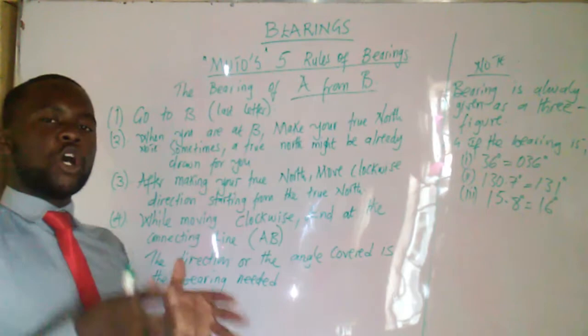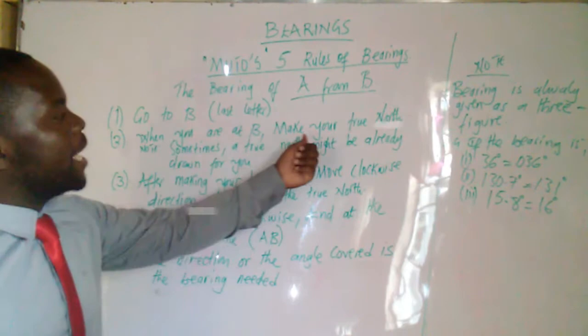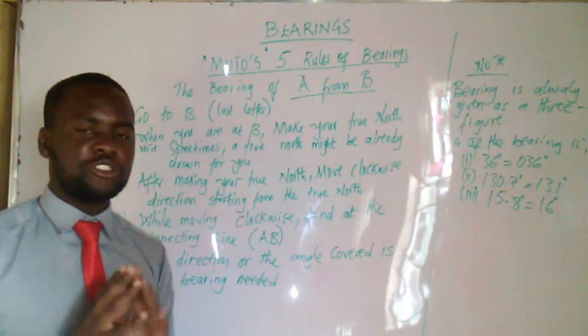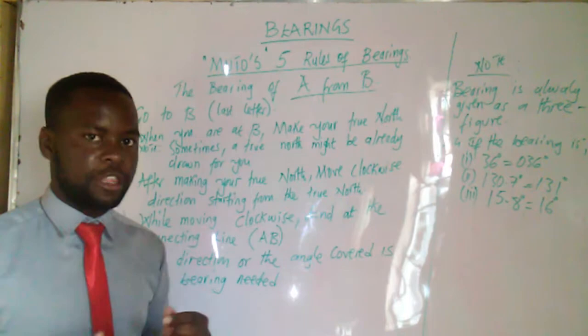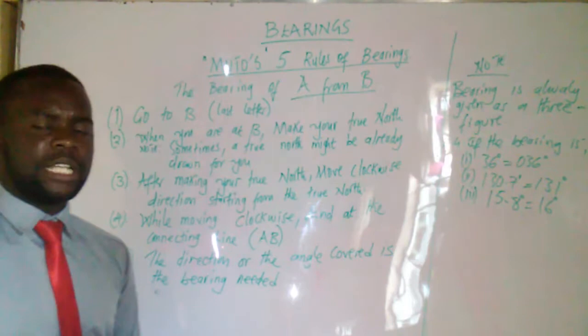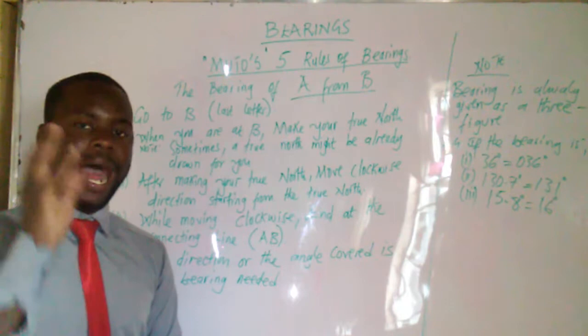When you go to B, what must you do? When you go to B, make your true north at point B. Make a true north at B. This true north, in the previous video, I introduced you to the north. So if you don't know how to draw a north, revisit that video again. Create a true north. Sometimes this north will be given to you. Sometimes the true north will be already drawn to you. Then you are well and good.